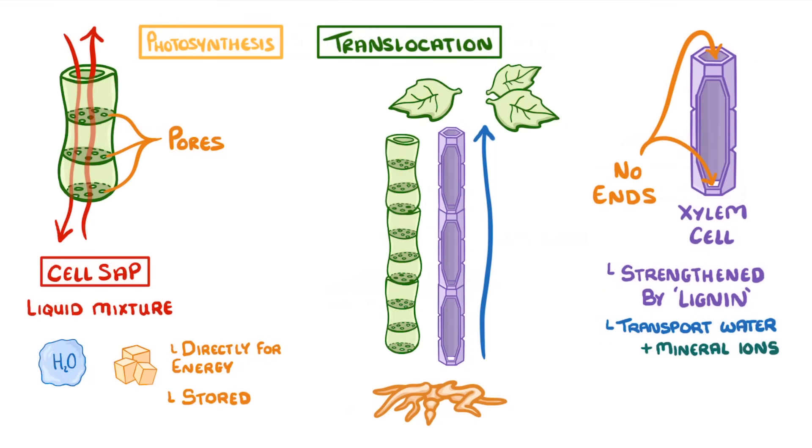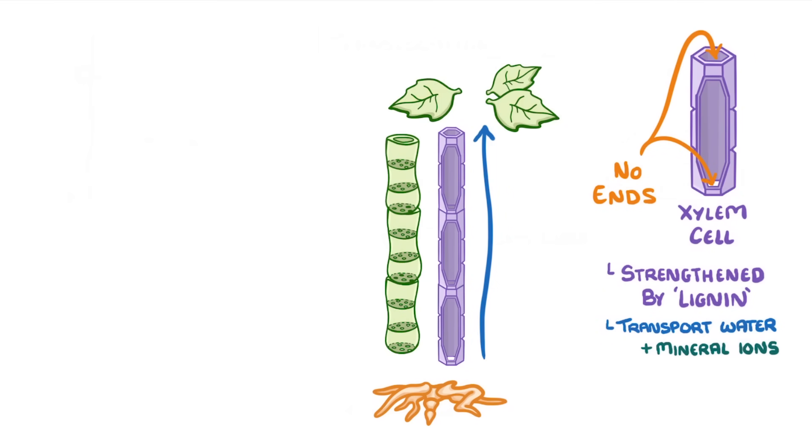Now the weird thing about the movement of water through a plant is that the entire thing is driven by the evaporation of water from the leaves. If you imagine all the water molecules as being arranged in one long chain, then every time water evaporates from the leaf out of the stomata, it drags the rest of the chain up slightly, pulling along another water molecule to replace it. As water is continually evaporating because the stomata need to be open to let in carbon dioxide, there will be a steady stream of water flowing up the plant.